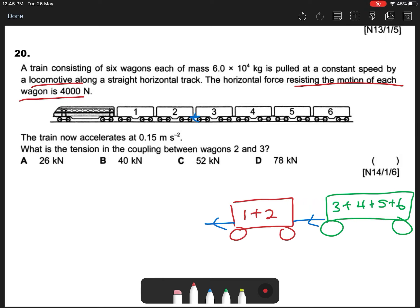So one wagon's frictional force is 4000 N. The train now accelerates at 0.15 m/s². What is the tension in the coupling between wagons 2 and 3? So this is a free body diagram of the question.